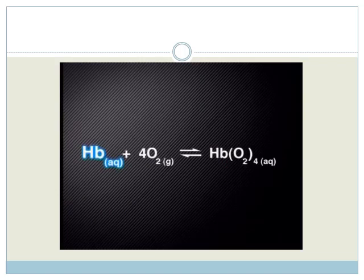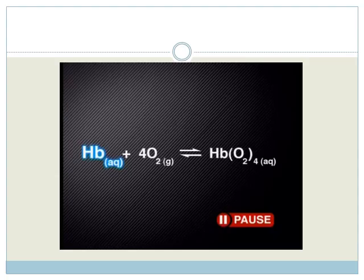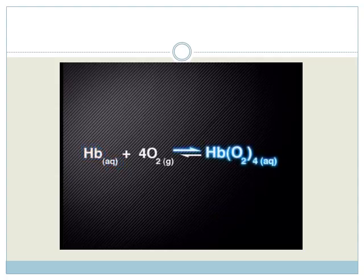An interesting thing happens in people who live in high altitude places — they adapt to the low concentration of oxygen. Their bodies produce more hemoglobin. Can you predict what effect an increase in the concentration of hemoglobin has on the system? The change or stress in the system is an increase in hemoglobin concentration. Hemoglobin is a reactant. The forward reaction will use up the hemoglobin. Therefore, we say the forward reaction is favored. A new equilibrium is reached and more oxyhemoglobin is produced.